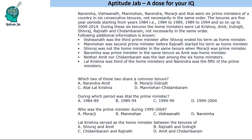Hello everyone, welcome to Aptitude Jab. This is a scheduling arrangement problem. There are six prime ministers of a country and they served in six consecutive tenures of five years each, starting from 1984 till 2014 — so 1984 to 89, 89 to 94, 94 to 99, 1999 to 2004, and so on till 2014. During these six tenures there were also six home ministers, and based on the given information we have to find who was the prime minister and home minister in each tenure.